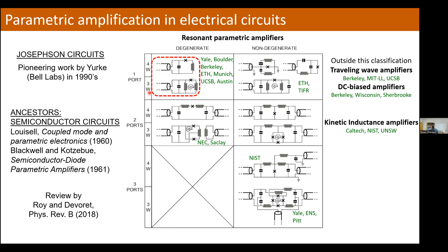There are also traveling wave amplifiers, DC-biased amplifiers, and amplifiers made using the nonlinear kinetic inductance of a superconductor. In today's talk I'm going to focus on the simplest type of circuit — a one-port degenerate amplifier realized either using four-wave mixing or three-wave mixing — and describe how we can construct these. Some of the ideas we show in terms of how we engineer these resonant paramps can also transfer into other types of paramps like the traveling wave amplifier.